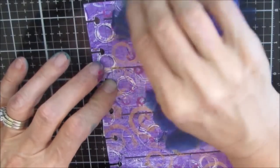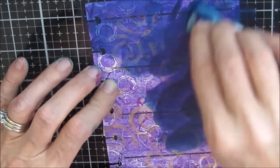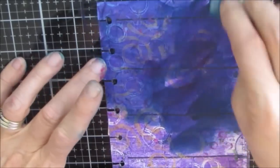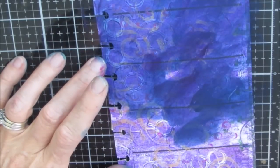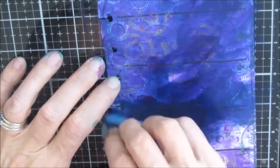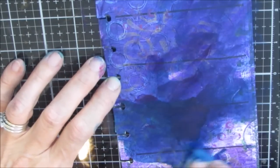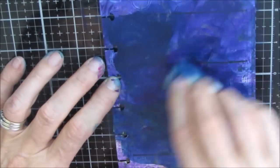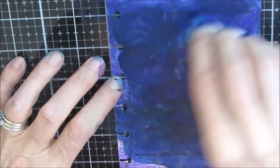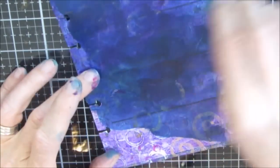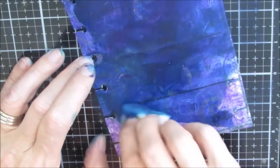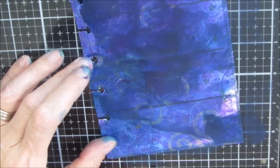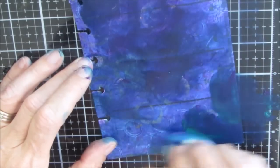I am mixing dioxazine purple and phthalo green and that makes an absolutely great navy. I'm just applying those on right on top of this gel print with a makeup sponge and I'm not looking for perfect coverage because some of the gold from underneath and some of the pattern from underneath still shows and it's going to add interest to my page.